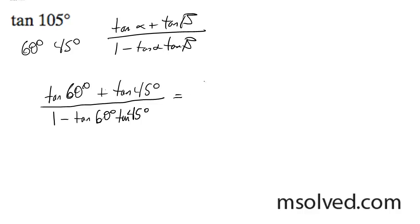Now we're going to have tangent of 60 is equal to root 3. Plus tangent of 45 is 1, and this is all going to be over 1 minus root 3 times 1, which is just 1 minus root 3.